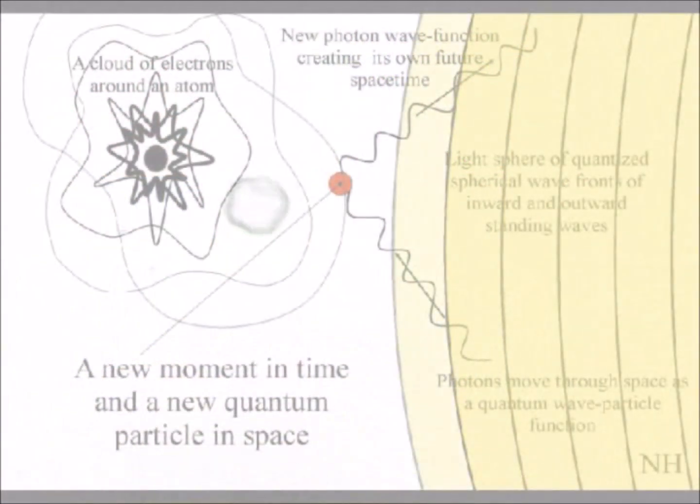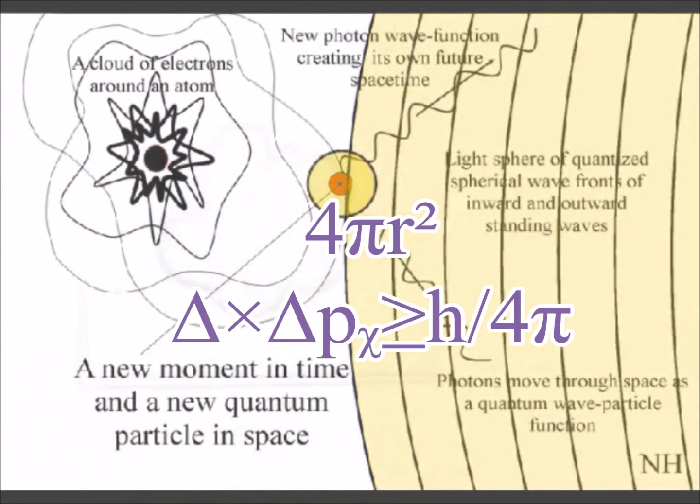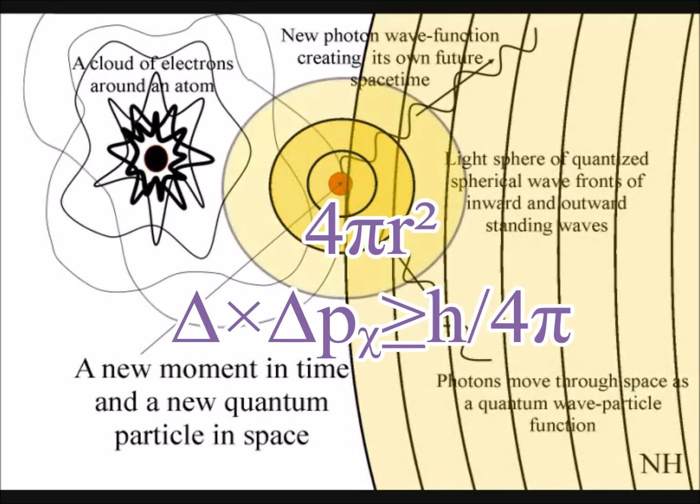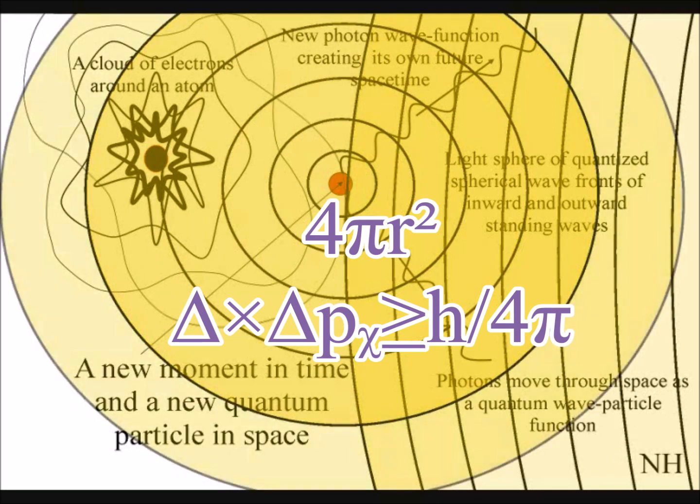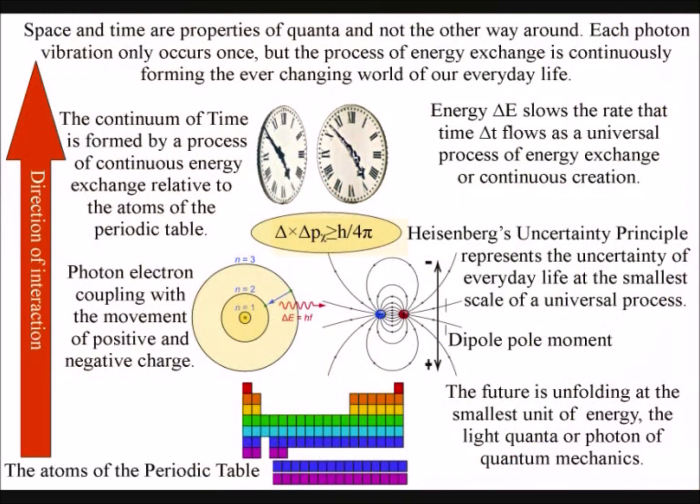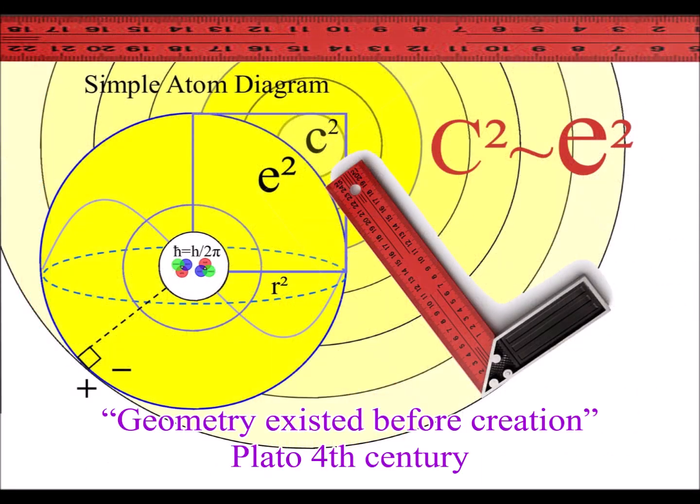Light waves radiate out spherically, forming the original pattern or template, with the interior of the sphere forming three-dimensional space. The radiating energy will always be at right angles to the surface of the sphere. This forms the original set square or 90 degree angle.